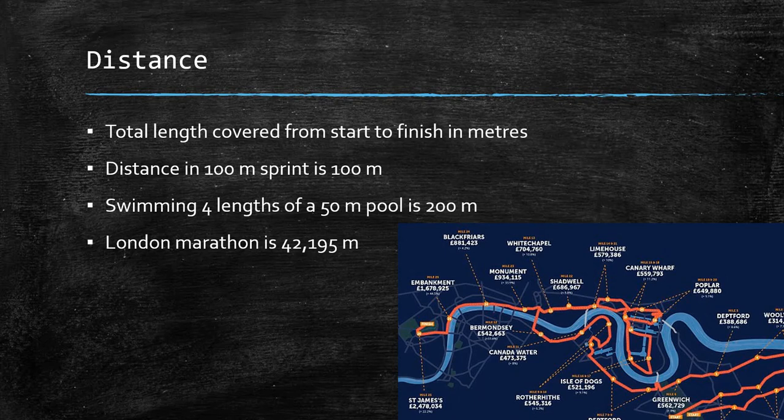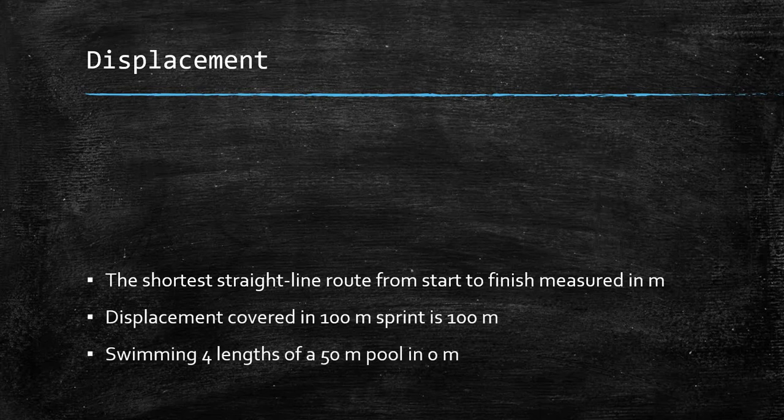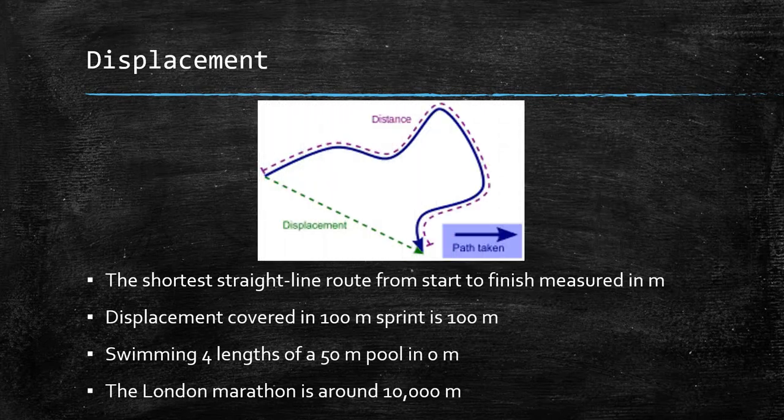Displacement is slightly different. Displacement is the shortest straight line route from start to finish, measured in metres. The displacement covered in a 100 metre sprint is 100 metres because that's the shortest distance from start to finish. However, swimming four lengths of a 50 metre pool gives you a displacement of zero because the start and finish are at the same spot. The displacement of the London Marathon is actually around 10,000 metres rather than the 42,000 metres they actually run.